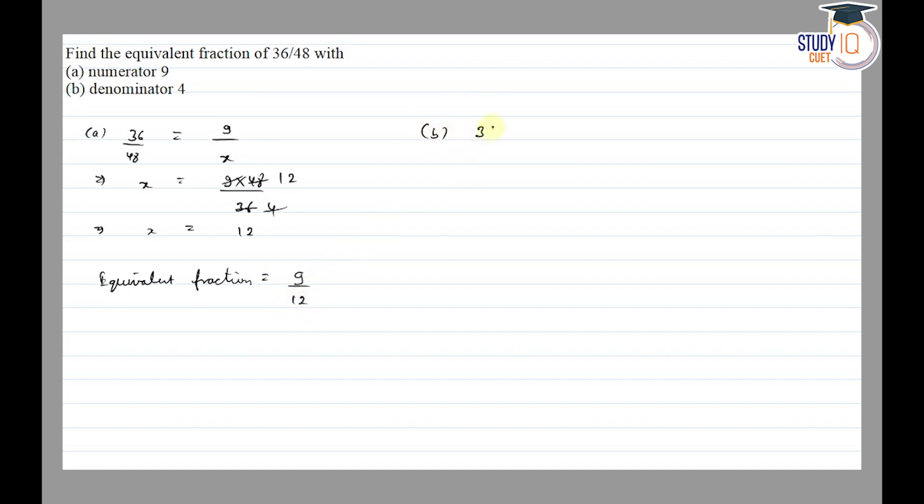Part (b) is 36 by 48 equal to, with denominator given as 4. The numerator is unknown. x is assumed, so by cross multiplication, x is equal to 36 into 4 upon 48.